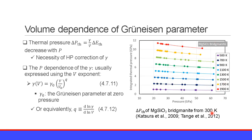This diagram shows the thermal pressure ΔPthermal of MgSiO3 Bridgmanite from 300 K. The violet line is ΔP from 300 K at 500 K, 700 K, 900 K, 1100 K, and up to 1900 K. We can see the thermal pressure decreases with increasing pressure or compression at a constant temperature. Therefore, we need a high-pressure correction for the thermodynamic Grüneisen parameter γ.